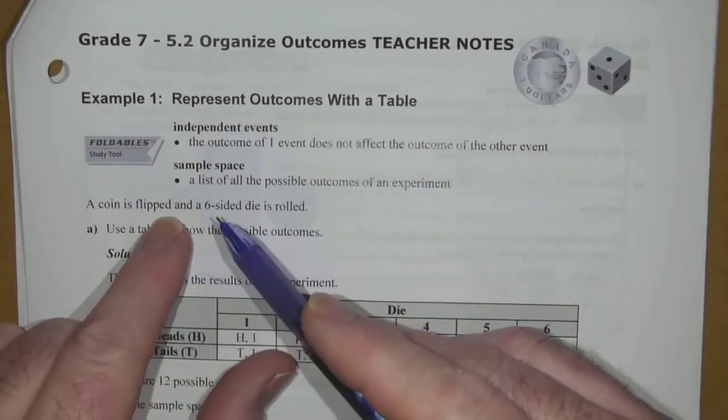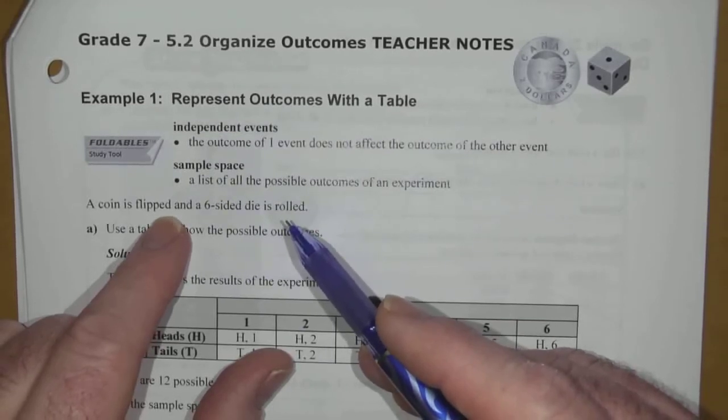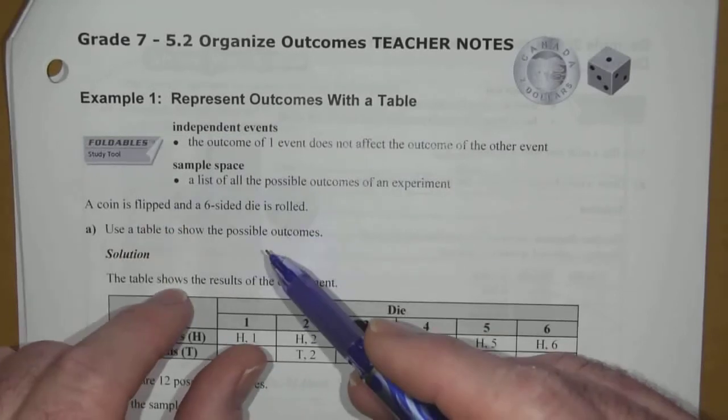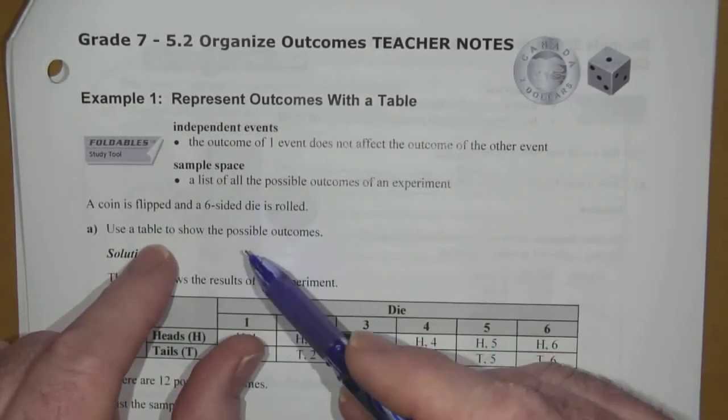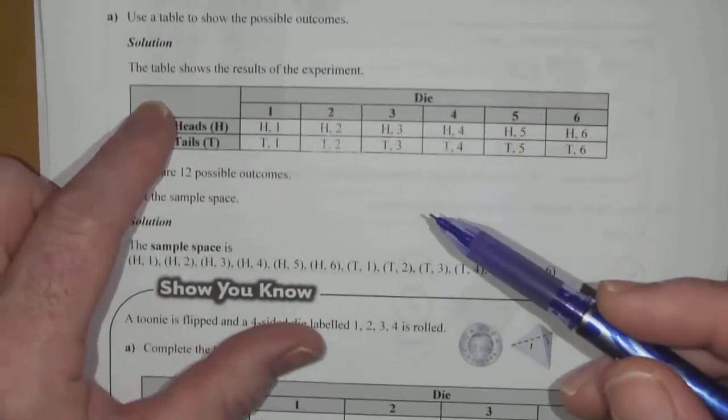So, as I just said, if a coin is flipped and a six-sided die is rolled, that's going to be the scenario we're looking at. Let's have a look at what the different possibilities are. And we're going to use a table to show all of the possible outcomes. And here's the table here.